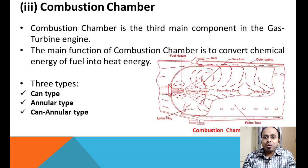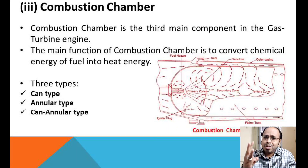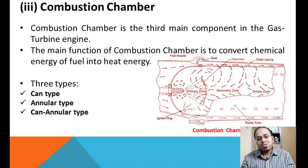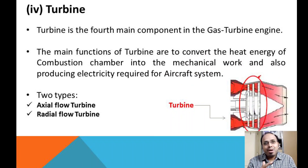In the gas turbine engine there are three types of combustion chambers: the first is the can type, the second is the annular type, and the third is the can-annular type. These are the three basic types of combustion chambers studied in gas turbine propulsion.